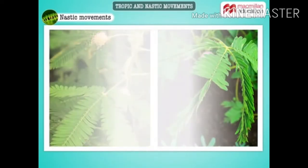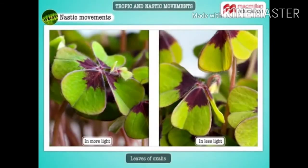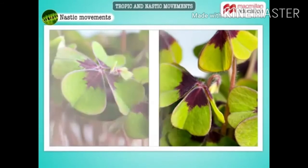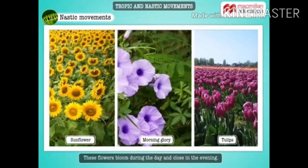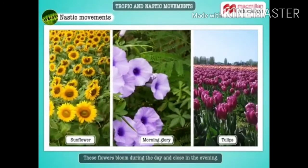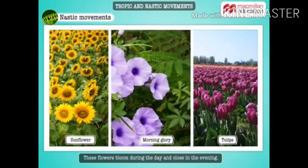The leaves of oxalis move in response to intensity of light. They open up in daylight and fold when the intensity of light is less. Flowers such as sunflowers, morning glory, and tulips bloom during the day and close in the evening.